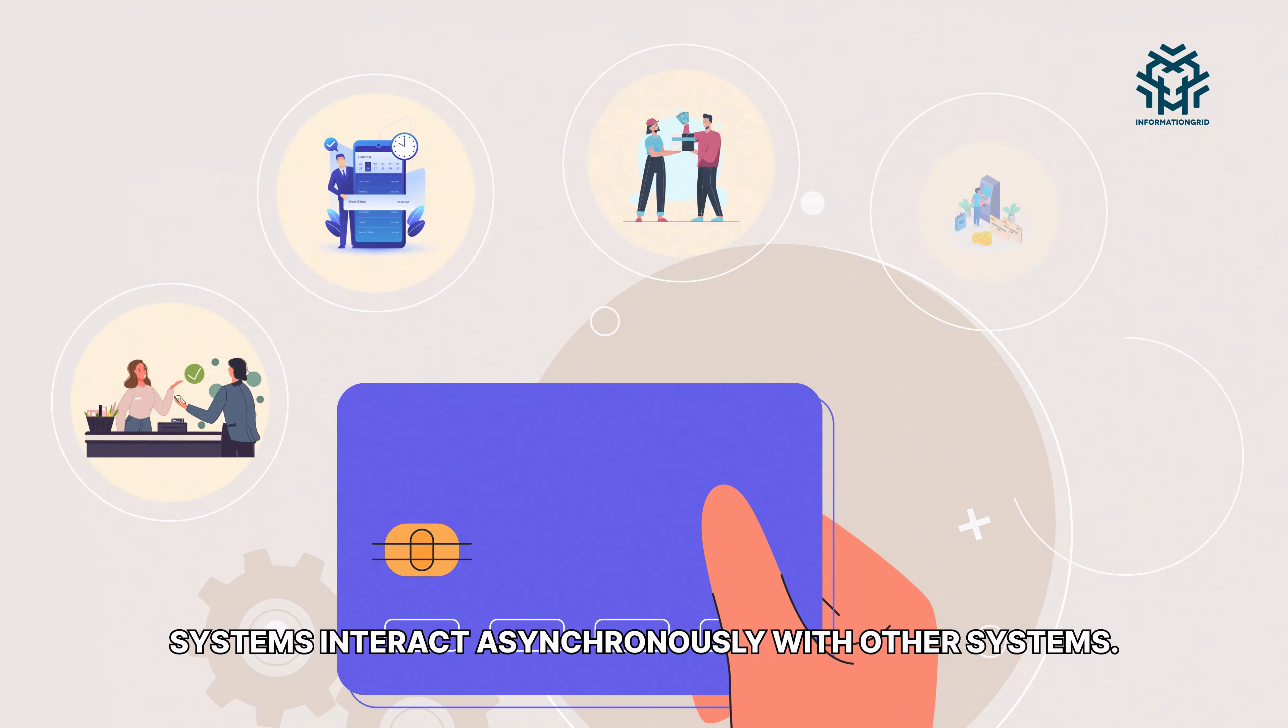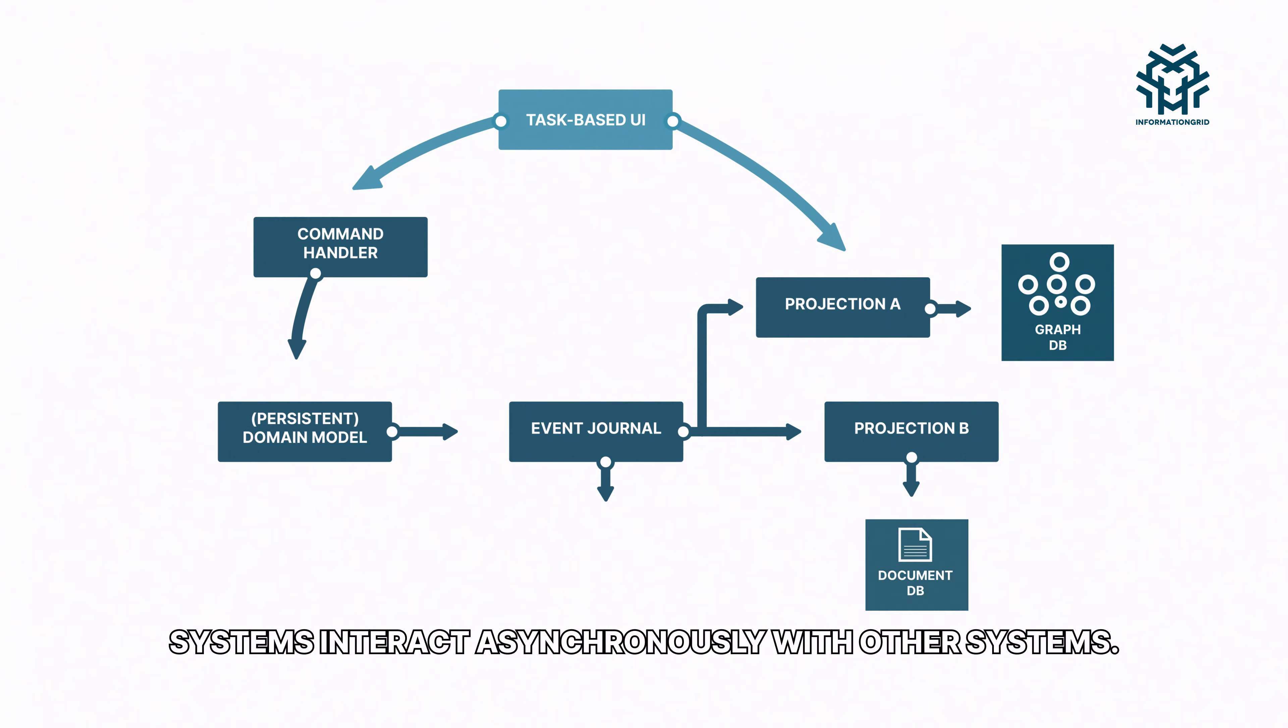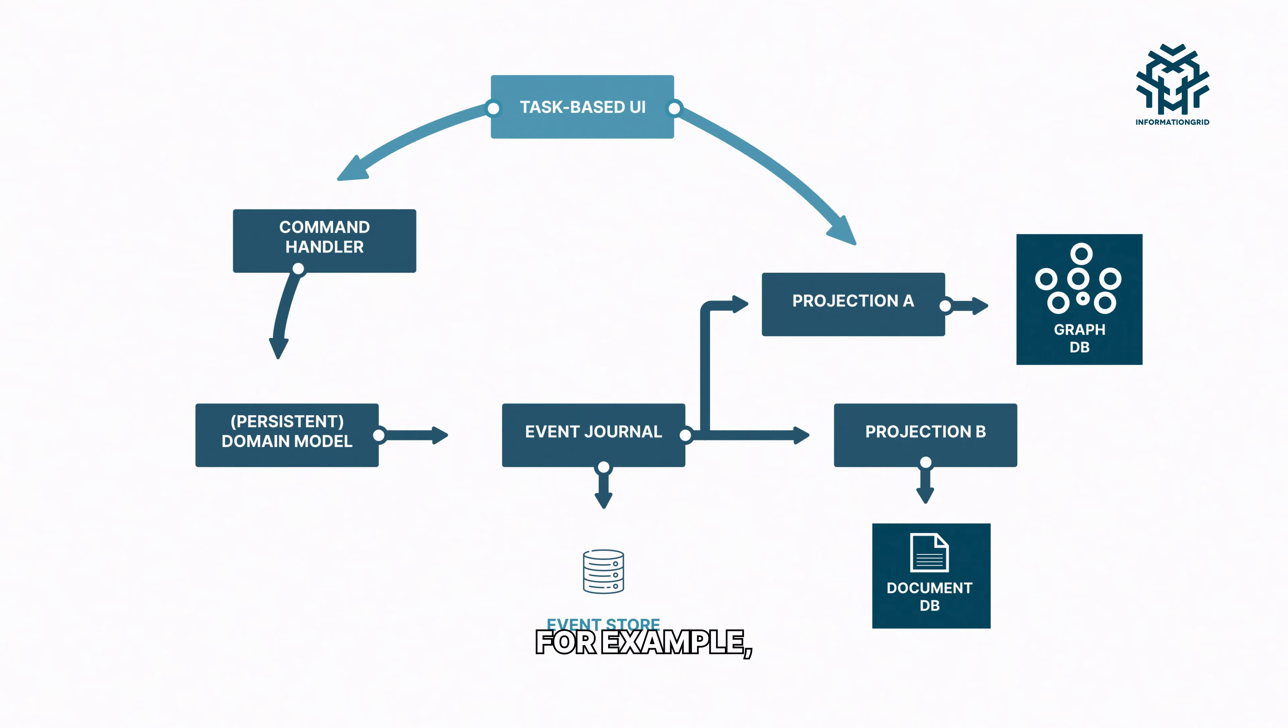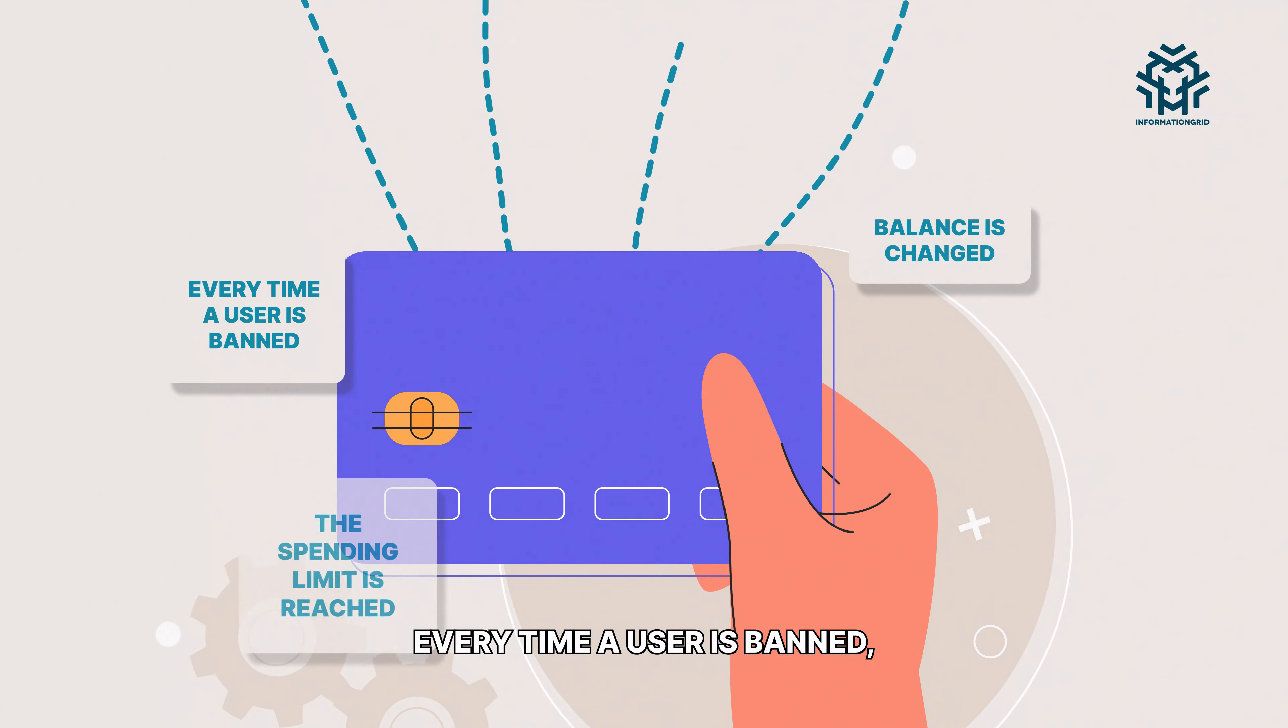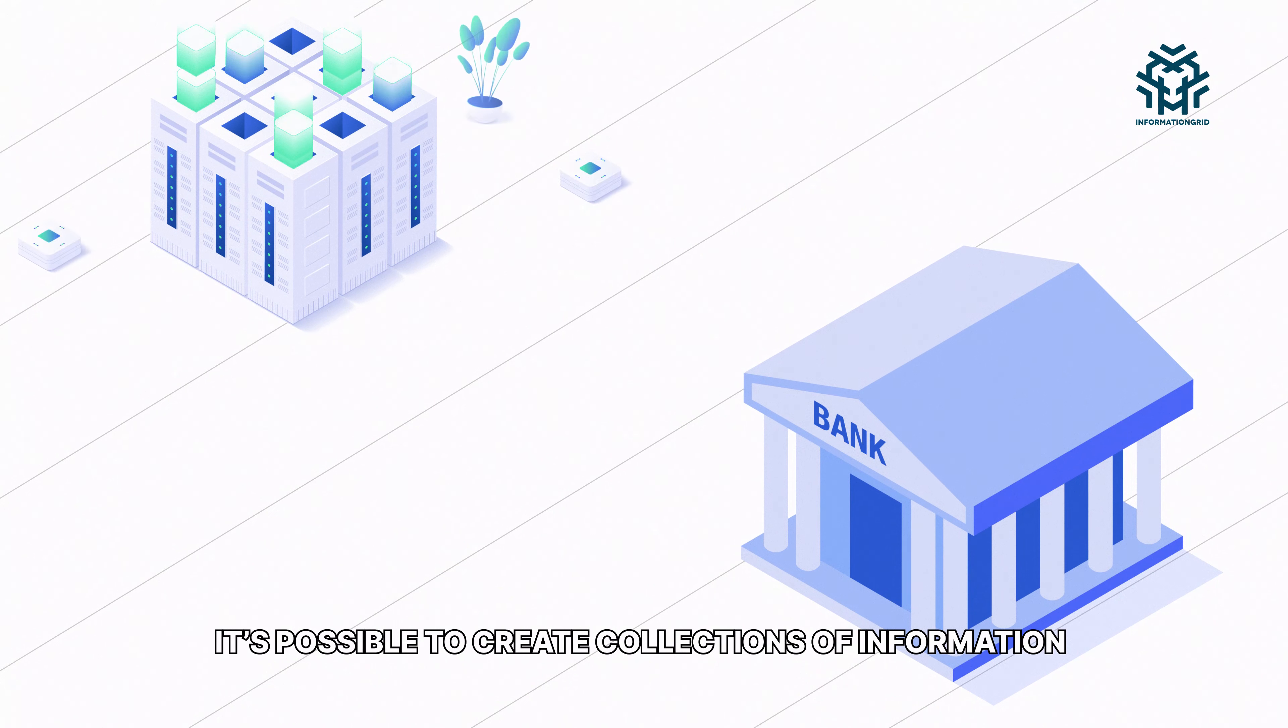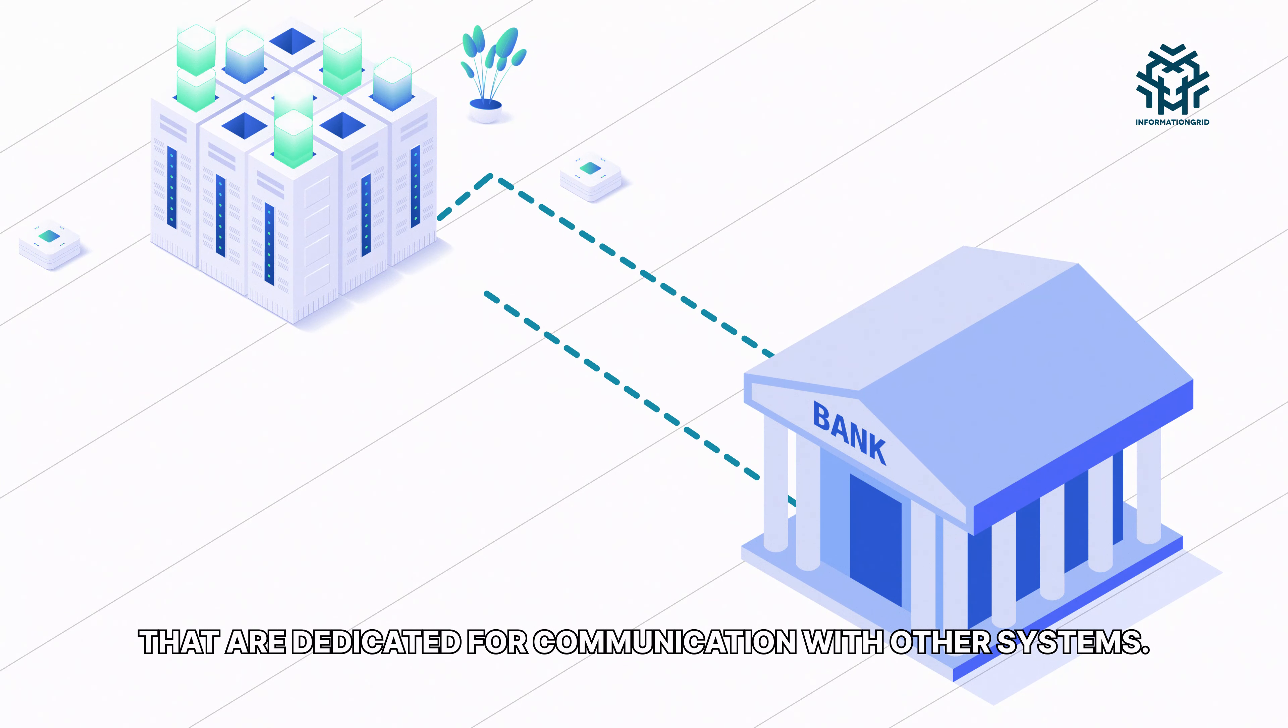Using events, systems interact asynchronously with other systems. It allows updates with every new request. For example, every time a user is banned, balance is changed, or the spending limit is reached. By combining these events, it's possible to create collections of information that are dedicated for communication with other systems.